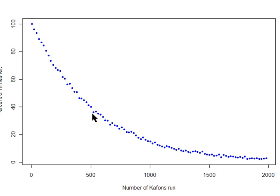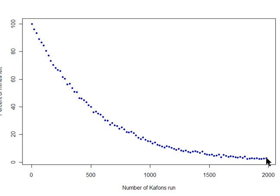So here, for example, in the simulation with 500 kafans released, about 38% of the mines were still remaining. As you can see, at first adding more kafans gives you almost a linear decrease in the percentage of mines left. But the closer you get to clearing all the mines, the more elusive that goal becomes. Even after 2,000 kafans have been released — which, if they had been moving perfectly straight, would have covered the area of our simulation four times over — there are still some mines that are left unexploded.